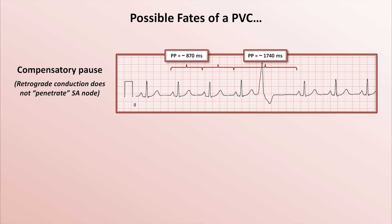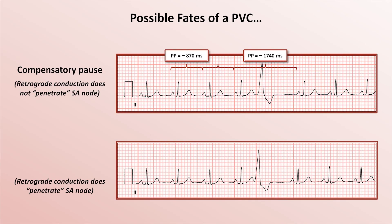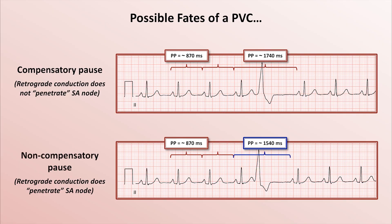In contrast, much less common is a PVC that does result in retrograde conduction that reaches and resets the sinus node. In this case, the P-to-P interval surrounding the PVC will be less than twice the normal P-to-P interval. This is referred to as a non-compensatory pause. If you look closely in this example, you might notice a tiny divot in the downstroke of the T-wave that follows the PVC. This is the retrograde P-wave caused by a depolarization wavefront moving from the AV node backwards to the sinus node, resulting in the sinus node resetting. The interval between the end of the retrograde P and the beginning of the next sinus P will be roughly equal to the normal P-to-P interval.